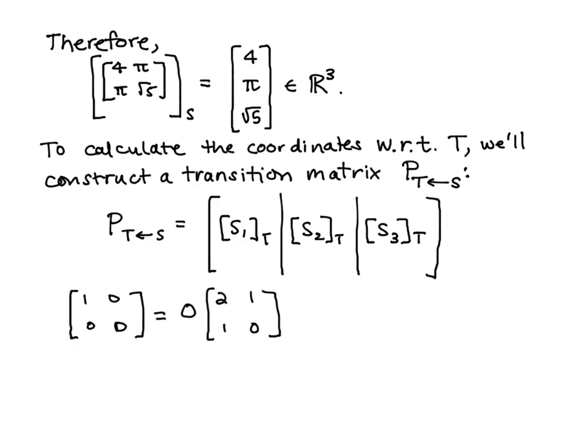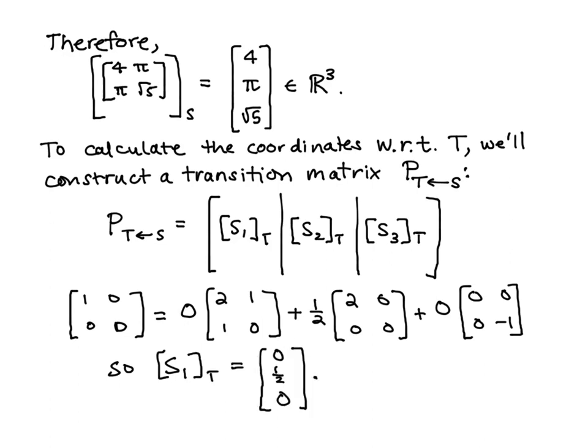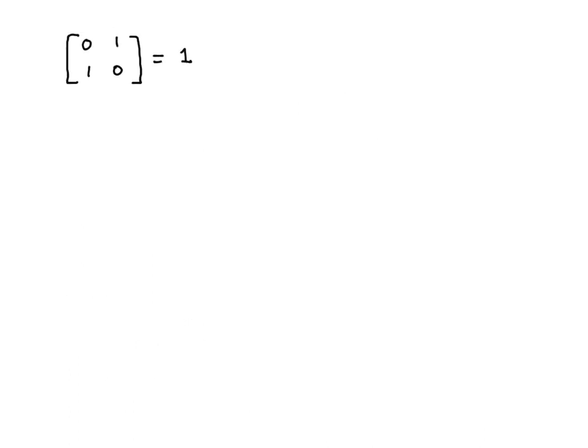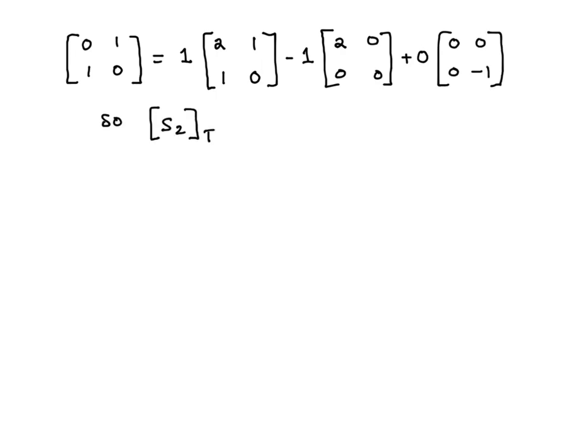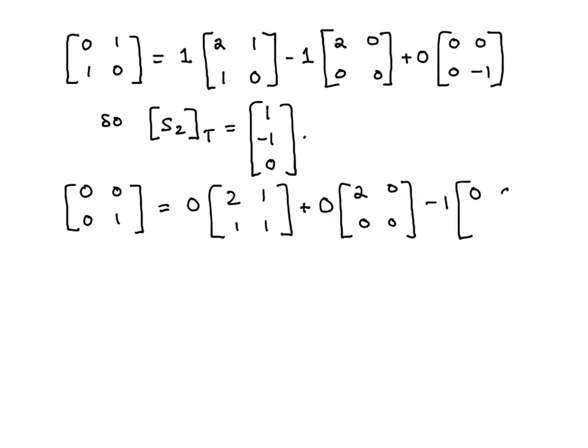So I can set up a matrix equation here and solve for the coefficients. And so I found that the coordinates for S1 are 0, 1 half, 0. And I can do this for the other ones as well. So I'll get coordinates for the second ordered basis element of S with respect to T, and the third S basis element with respect to T.